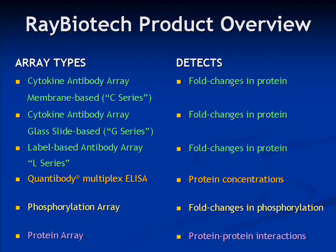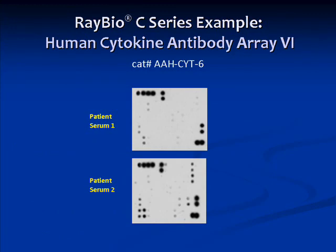We will now present examples of common uses of Ray Biotech's arrays. Here we have an example using human cytokine antibody array 6. In this experiment, serum samples from two different patients were tested with the array. The presence of various cytokines were then detected, yielding an inflammatory signature for each patient. Levels of inflammatory molecules were considerably higher in patient 2.